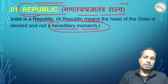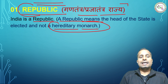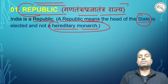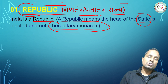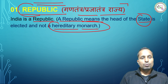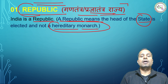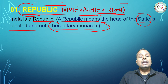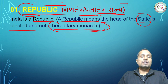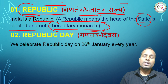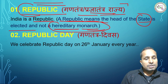A hereditary monarch means राजाओं का system — where rulers come from a dynasty. In a republic, the head of state is elected by the people. India is a republic — the head of state is elected and not a hereditary monarch, यानि वंशानुगत राजाओं का system नहीं होता।